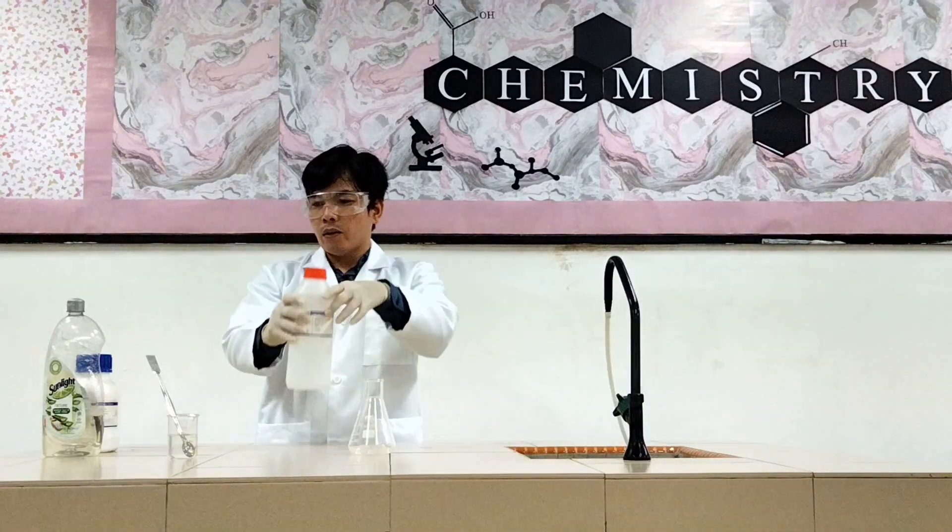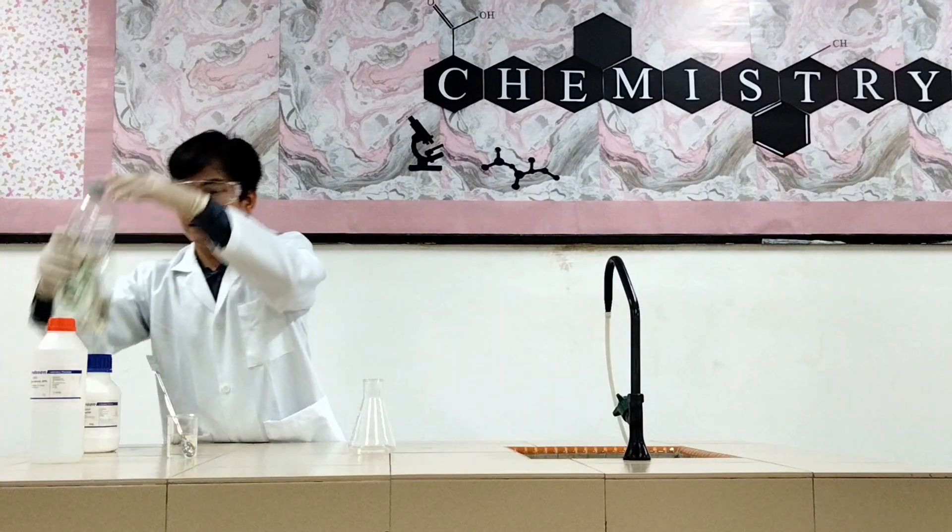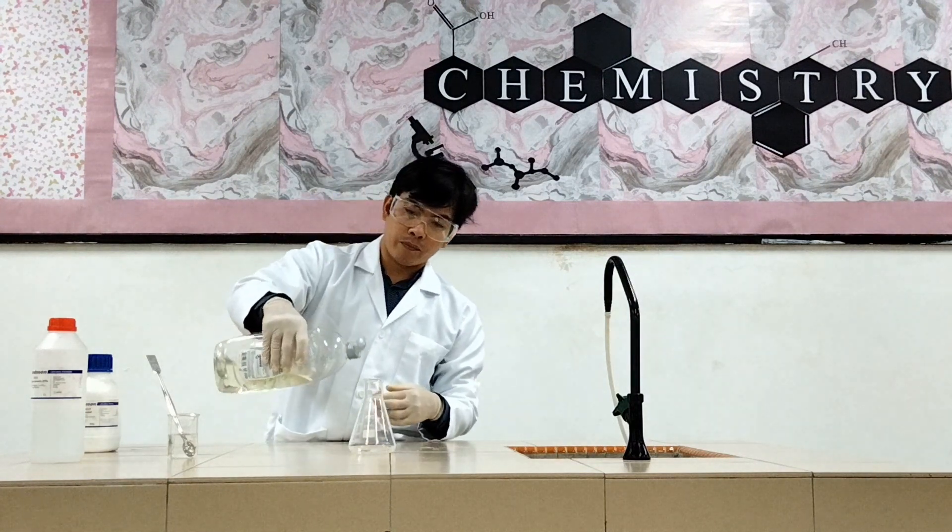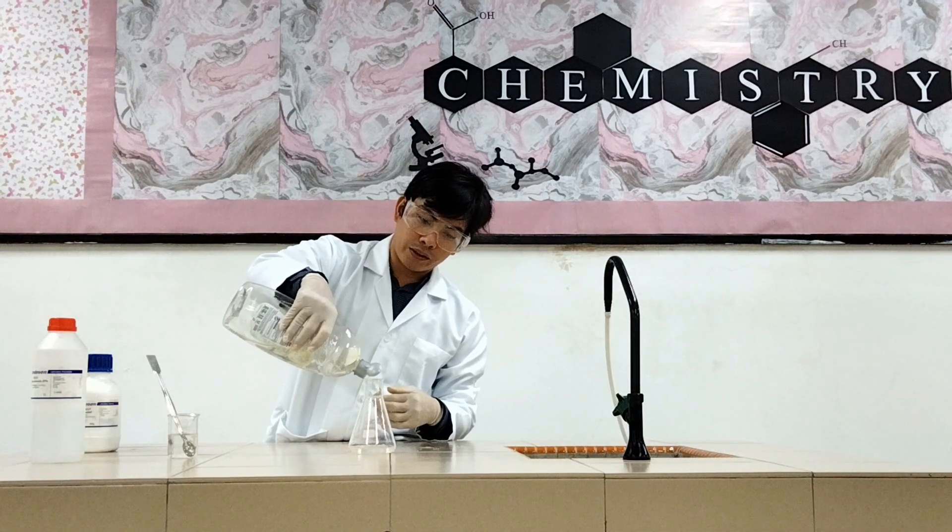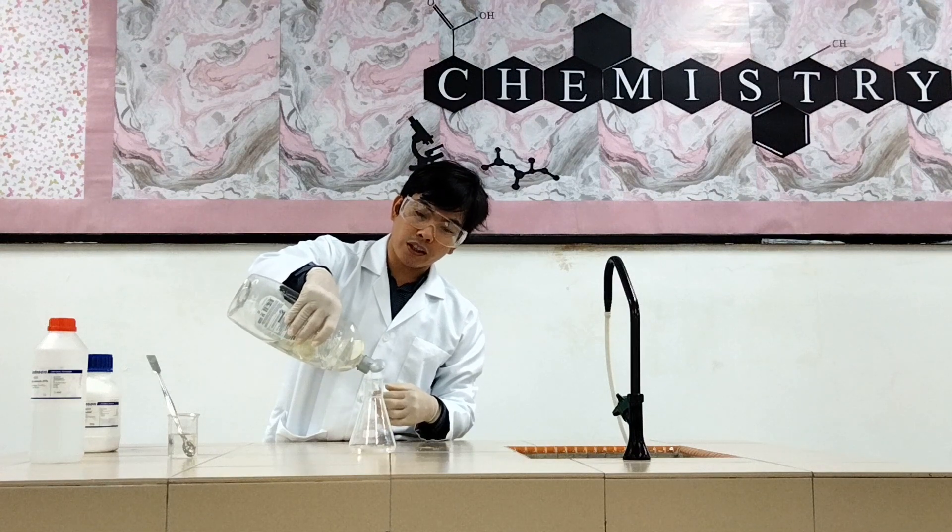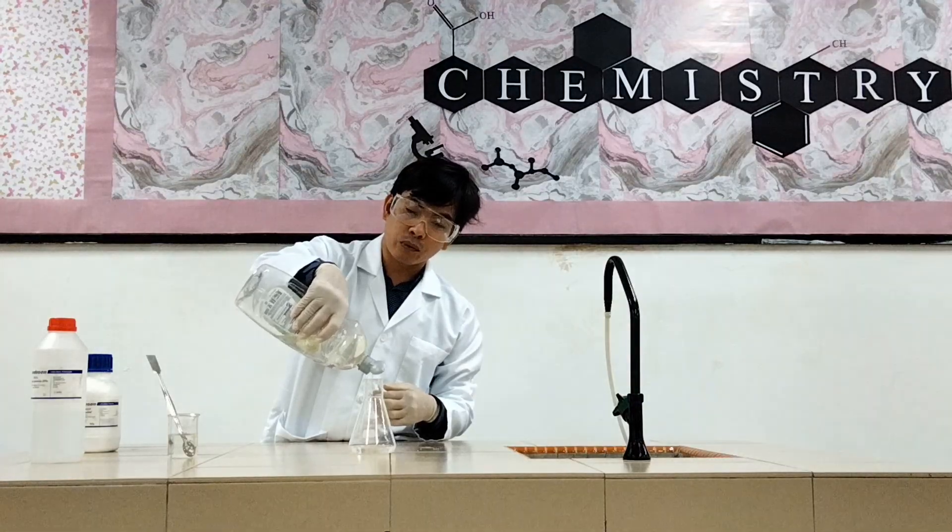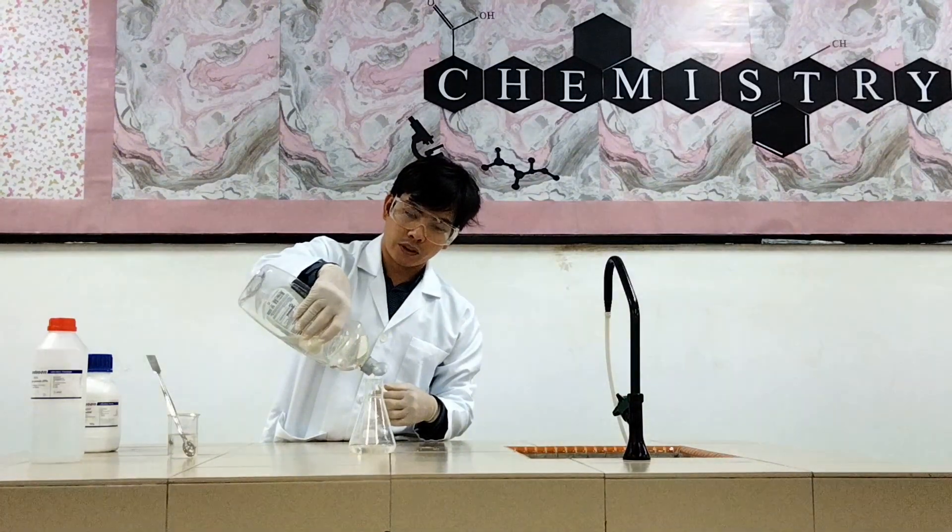And then we put the dishwashing liquid. So again, this is a decomposition of hydrogen peroxide. It will produce oxygen gas. So this dishwashing liquid will trap the oxygen gas that will be produced.